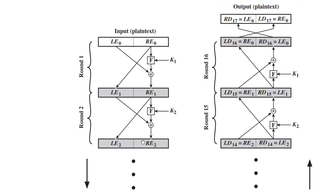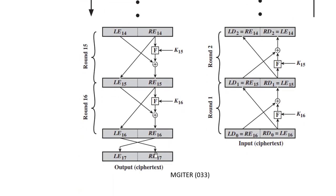There are 16 rounds in the Feistel structure. First, the plaintext is divided into two halves: LE0 and RE0 for encryption. The left and right halves are divided, the right half is passed directly as the left half of the next round, and the right half is also applied to function f with the round key. The output of that function is XORed with the left half to form the right half of the next round. This procedure continues until round 16, at which point the two blocks are swapped and merged together. This completes the encryption process in the Feistel cipher.